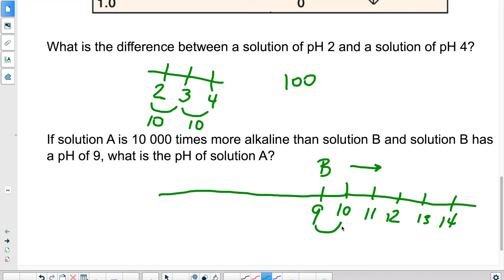And we said 10,000. So 10, 100, 1,000, 10,000. Because it's times 10 every time. So that means my solution A has a pH of 13.